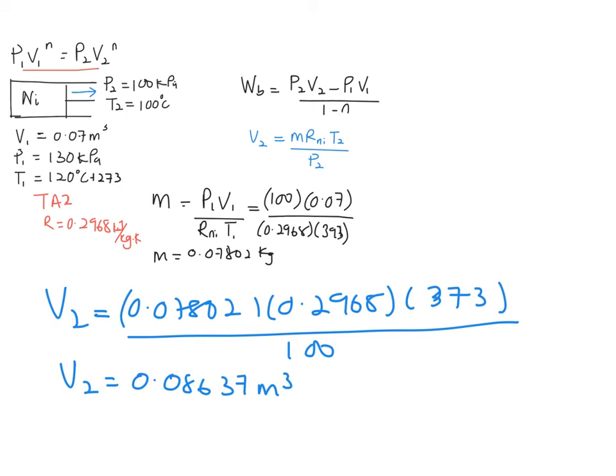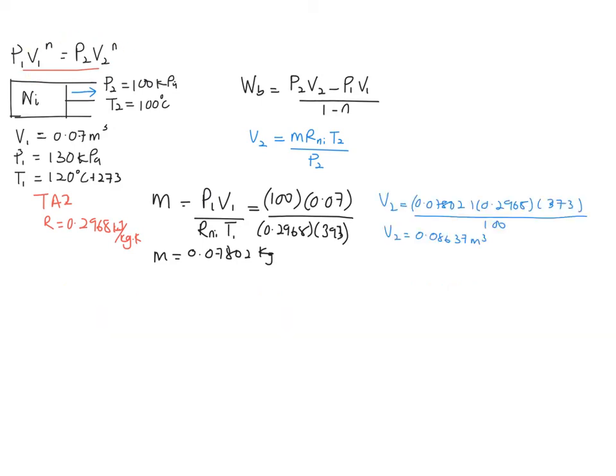So you can see here that we already have the value for your V2, but there's another value, which is your n, where n can be obtained from this relation that we have. So now let's solve for your n.